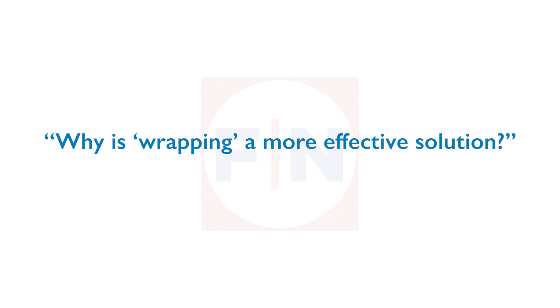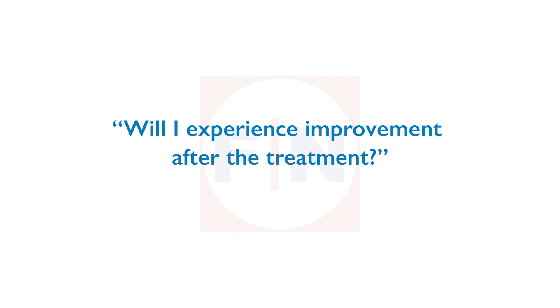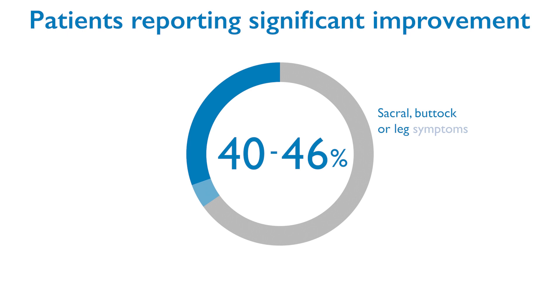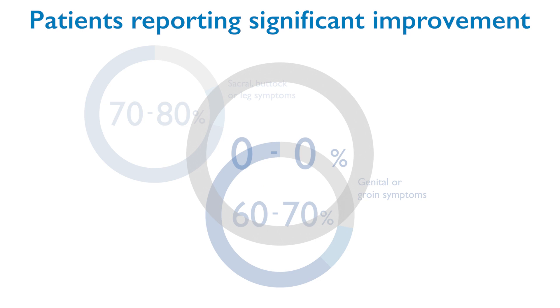The wrapping is permanent, and I've never had a Tarlov cyst that I've treated with wrapping recur. Other smaller cysts can become bigger and cause symptoms over time, but that's extremely unusual. I really feel like the treatment I've developed — the wrapping — is superior, and I have statistical evidence to prove it. My statistics are that 70 to 80 percent of patients get significant improvement in sacral, buttock, and leg symptoms including the ability to sit longer. 60 to 70 percent get improvement in symptoms in the private areas, and 50 to 60 percent get improvement in bladder and bowel symptoms. That's data from over 800 patients followed for two years after surgery.